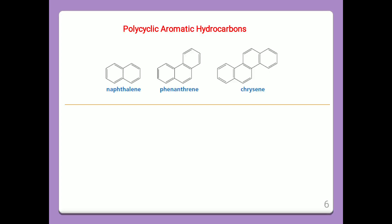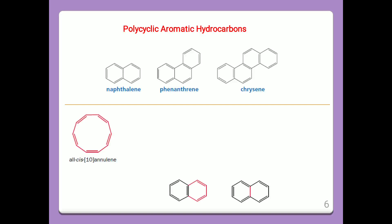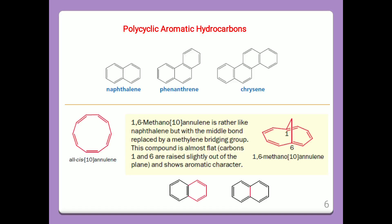Polycyclic aromatic hydrocarbons. For example: naphthalene, phenanthrene, and chrysene. Here the number of benzene rings is increased. All of these are 10-annulene systems. Another two examples are naphthalene structures where the compound shows aromatic character.